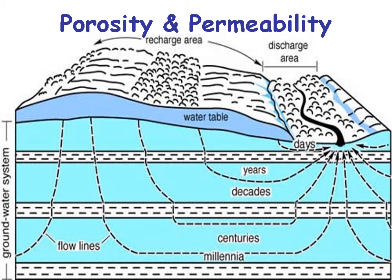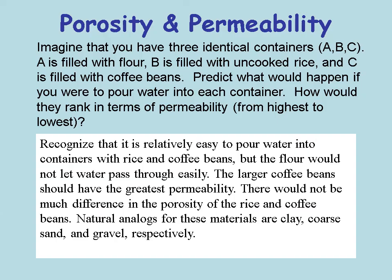Looking at the discharge area — the base level of water running through the ground — close to the base level, it takes only days for water from the recharge area to reach base level. Further up the water table, it may take years to travel to the discharge area, or even decades if it flows deeper. Water that flows from the top of the water table recharge area down to the lowest part of the groundwater system may take thousands and thousands of years to flow to the discharge area.